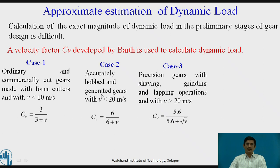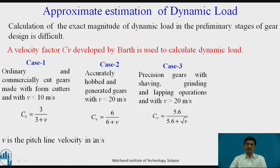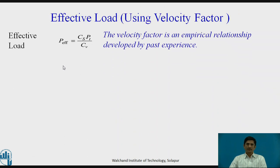There are three cases. For ordinary and commercially cut gears where velocity is less than 10 m/s, the velocity factor Cv is 3 upon (3 + V). For case two, accurately hopped and generated gears where velocity is less than 20 m/s, Cv equals 6 upon (6 + V). The third case: precision gears with shaving, grinding and lapping operations where velocity is greater than 20 m/s, Cv is 5.6 upon (5.6 + √V), where V is the pitch line velocity in m/s, calculated as V = π D' N upon (60 × 10³). Effective load is calculated as P_effective = CS × Pt upon Cv. The velocity factor is an empirical relationship developed by past experiences.